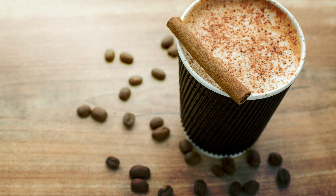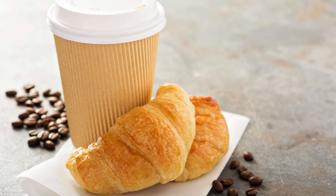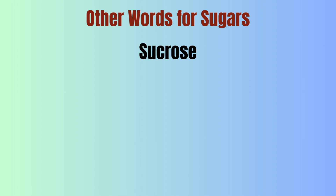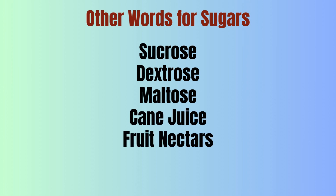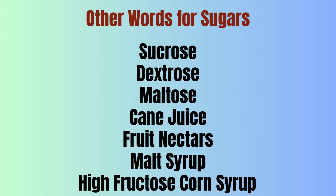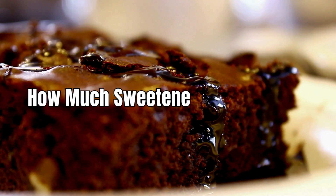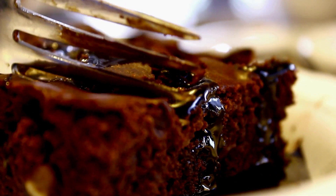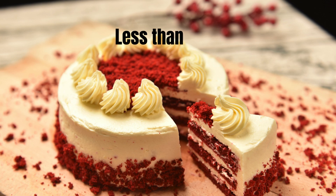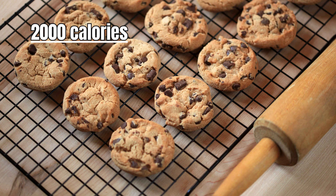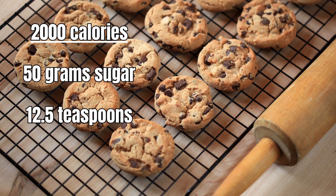It's important to check food labels for products you are buying and be aware of the various terms that are all other words for sugars. The U.S. dietary guidelines advise people to limit their intake to less than 10% of their daily calorie intake. For a person eating 2,000 calories per day, this would equal 50 grams of sugar, or about 12.5 teaspoons.